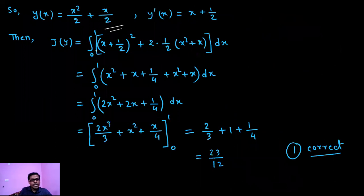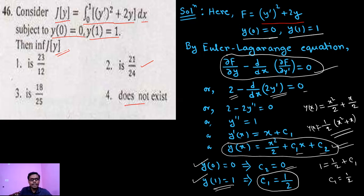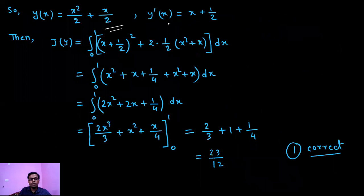Now j[y] equals to integration 0 to 1. Here given j[y] equals to (y')² plus 2y. So first of all, we calculate the y'. y' equals to x plus half.